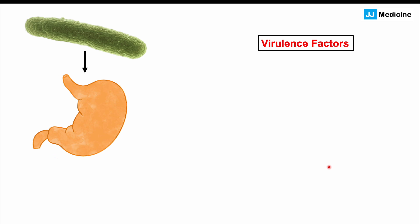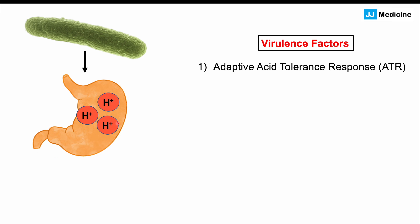When a patient consumes Listeria in contaminated food, the bacteria enters the stomach's acidic environment. One virulence factor it uses to survive is the adaptive acid tolerance response, or ATR. At lower pH levels, enough bacteria can be destroyed to lessen or prevent infection. This is why patients on proton pump inhibitors like pantoprazole or omeprazole are at higher risk — those drugs reduce stomach acidity, allowing more bacteria to survive.